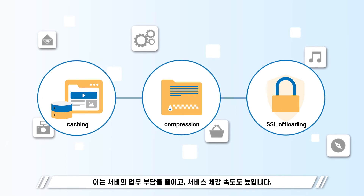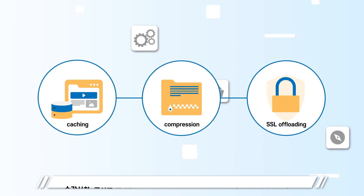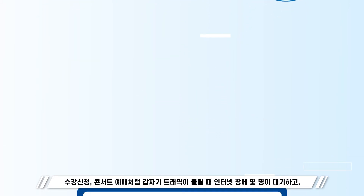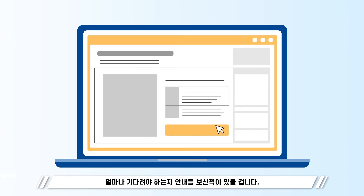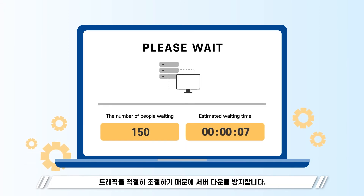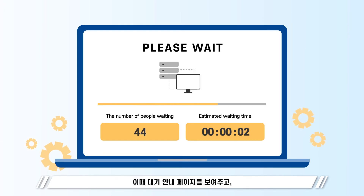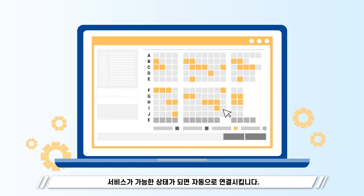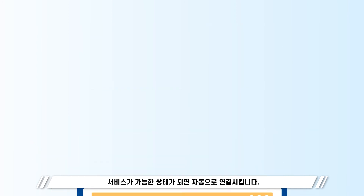This is for reducing server load and speeding up the service experience. You may have seen instructions showing how many people are waiting and how long you have to wait when there is massive traffic suddenly, like applying for a class or concert ticketing. PASK prevents server downtime since exceeding traffic in the server is appropriately balanced. At this time, it shows a waiting pop-up and connects automatically when the service is available.